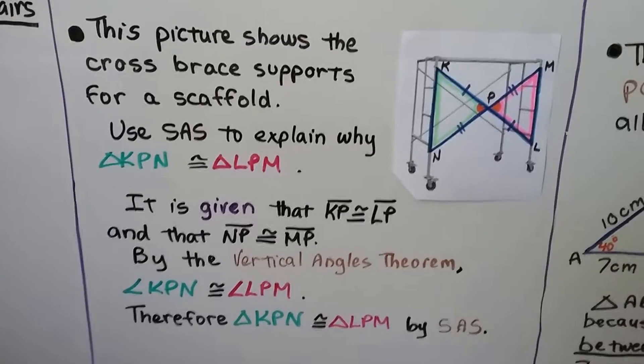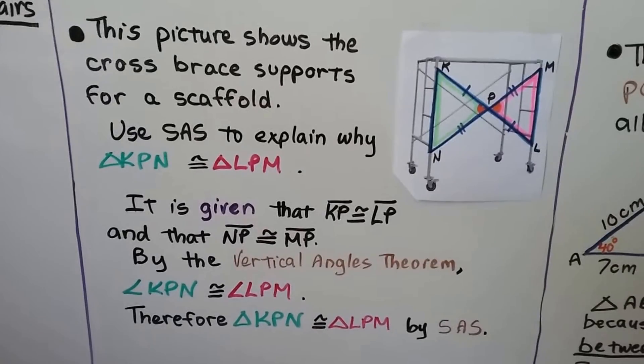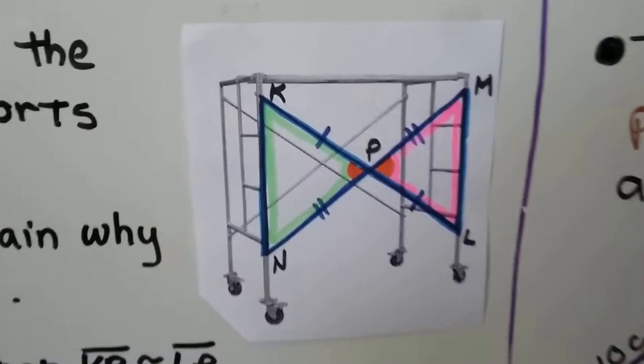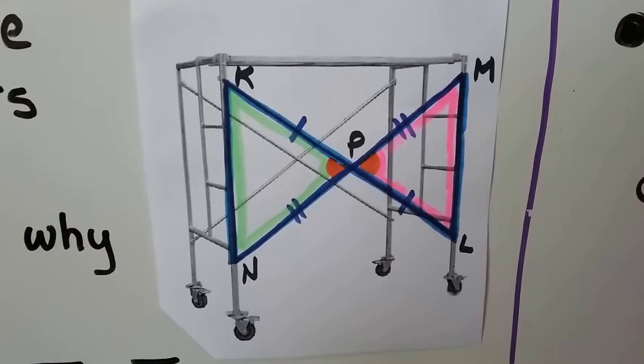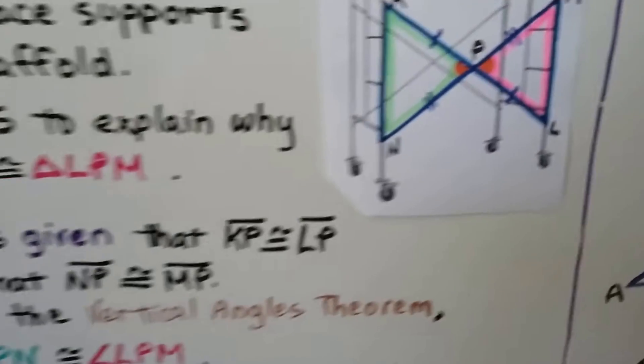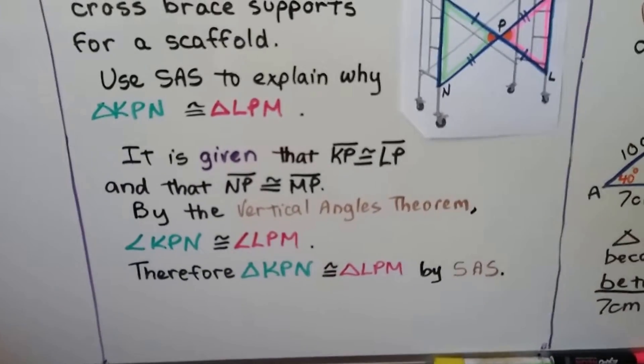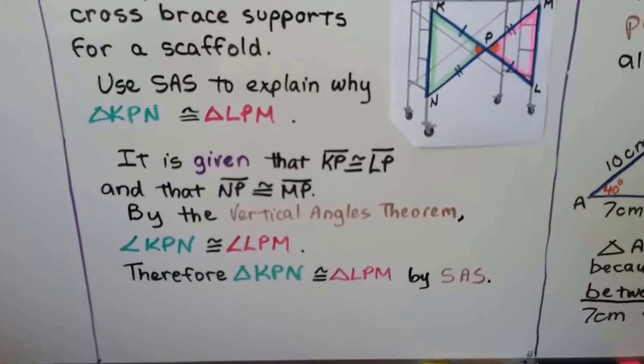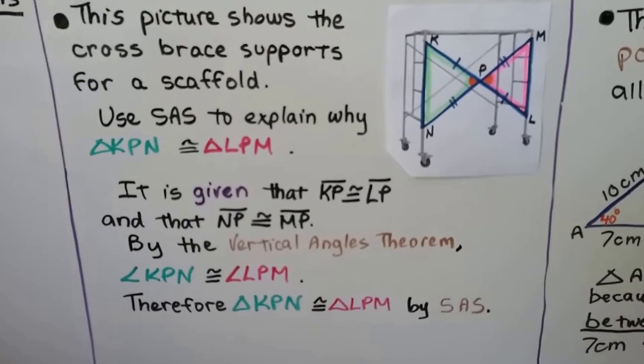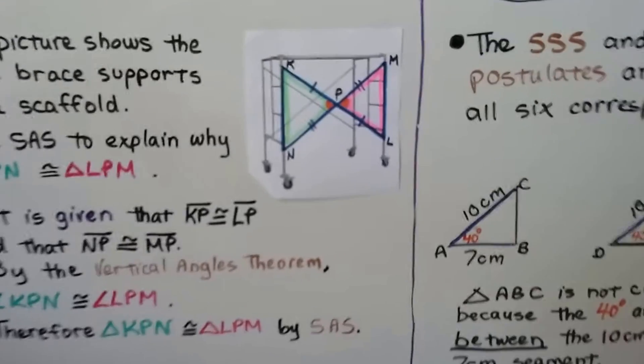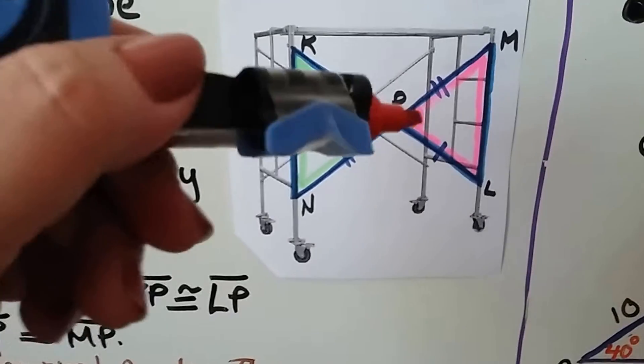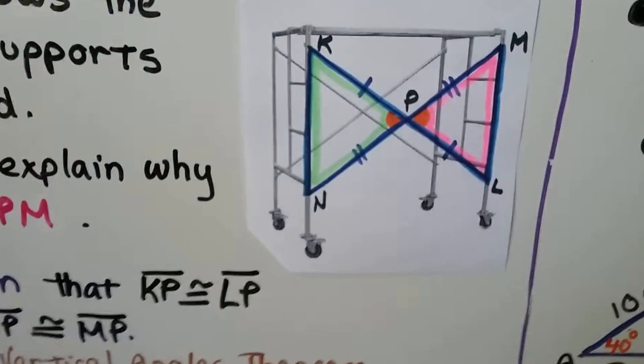By the vertical angles theorem, angle KPN is congruent to angle LPM. We've got our included angles right there in the middle. Therefore, if those two angles are congruent, triangle KPN is congruent to triangle LPM by side angle side. You can see we've got a congruent side, a congruent angle, and a congruent side.